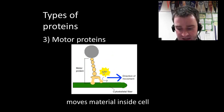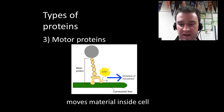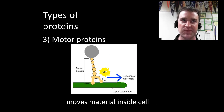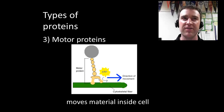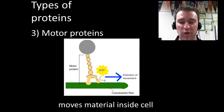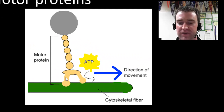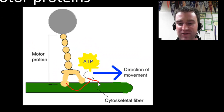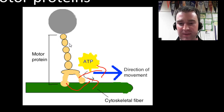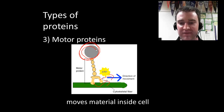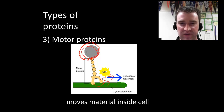Motor proteins are another type we'll see later, and they essentially transport materials as well, but they carry them inside a cell from one place to another. Motor proteins effectively have little legs that walk along cytoskeletal fibers, carrying something of value from one organelle to another.